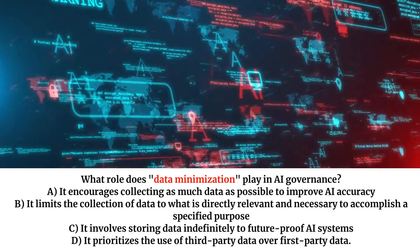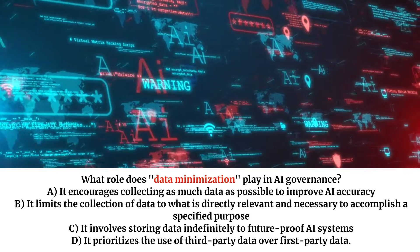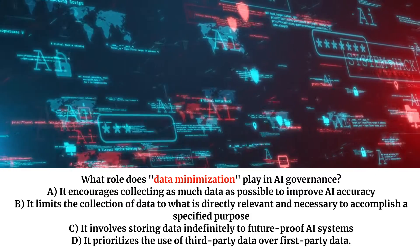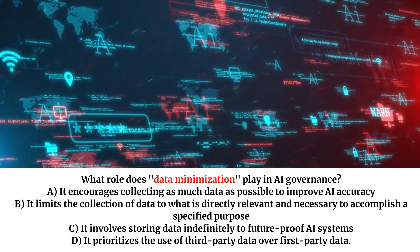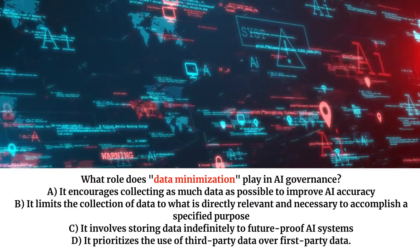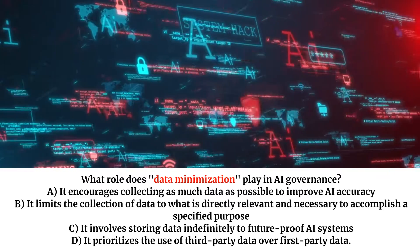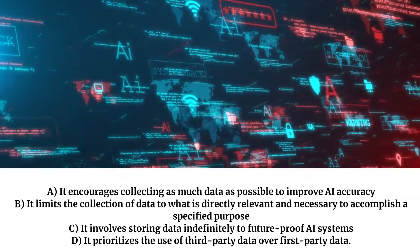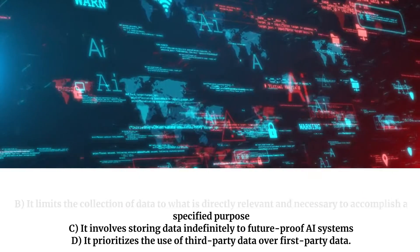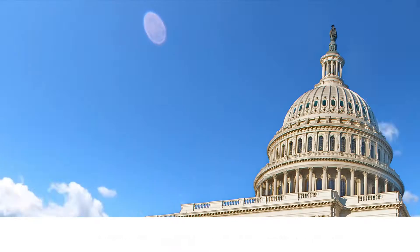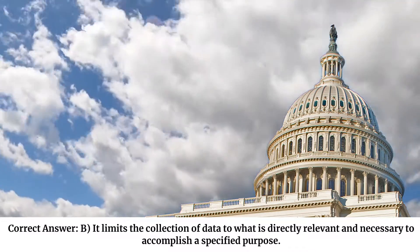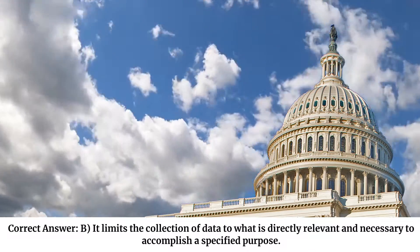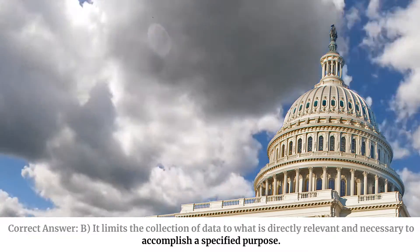What role does data minimization play in AI governance? A. It encourages collecting as much data as possible to improve AI accuracy. B. It limits the collection of data to what is directly relevant and necessary to accomplish a specified purpose. C. It involves storing data indefinitely to future-proof AI systems. D. It prioritizes the use of third-party data over first-party data. Correct answer: B. It limits the collection of data to what is directly relevant and necessary to accomplish a specified purpose.